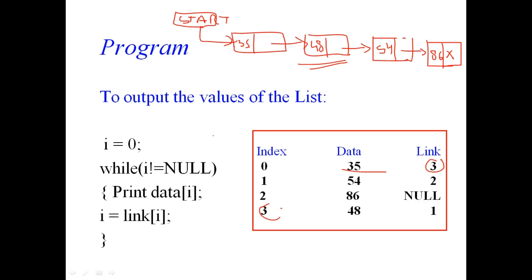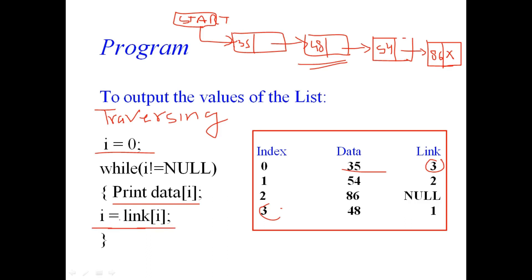Now we can write the traversal algorithm implemented using the array data structure. We initialize i equal to zero and keep accessing each index value until we reach the null pointer. While i is not null, we print data[i] and update i with the statement i equals link[i]. Unlike a simple array where we would increment i, here we update i using link[i] to follow the linked list.